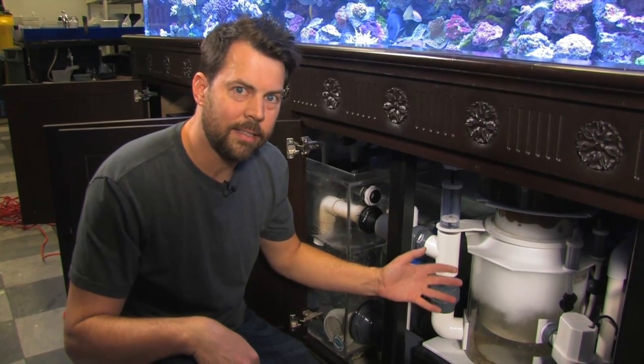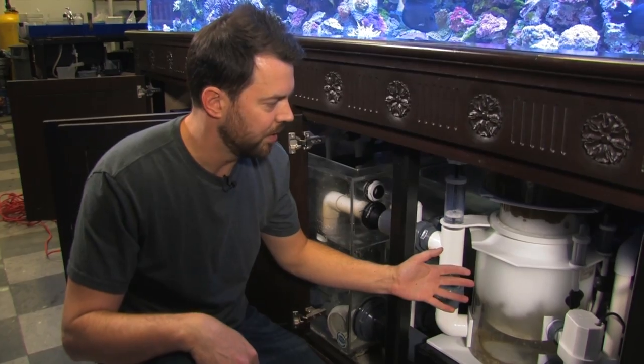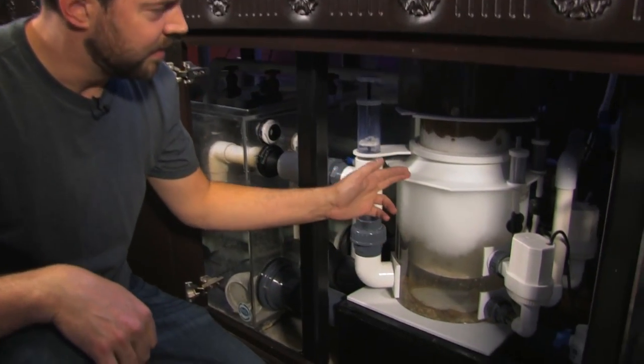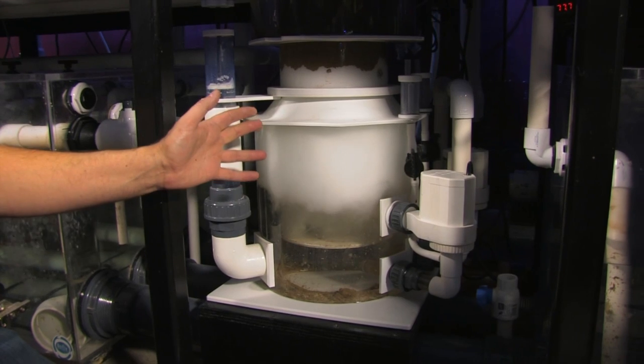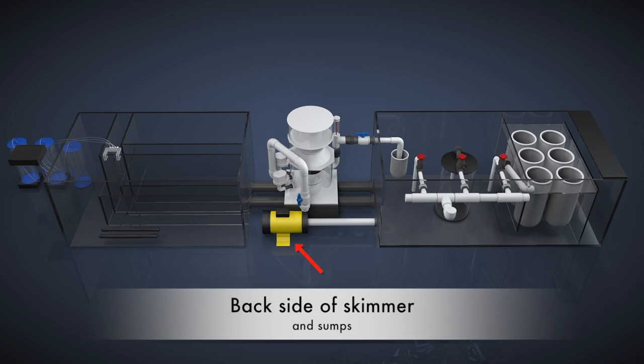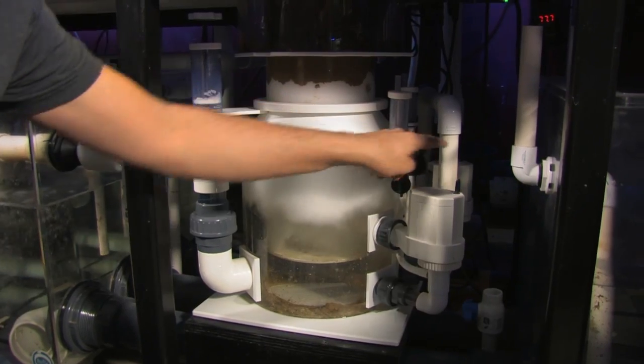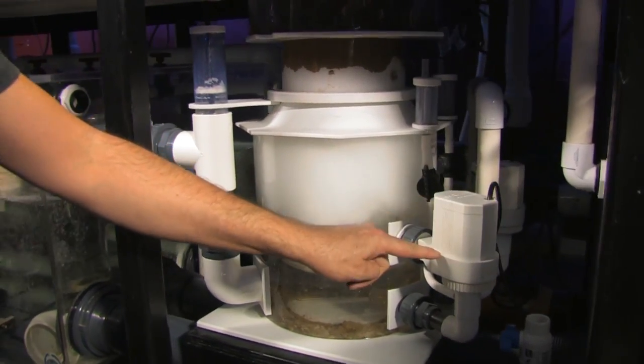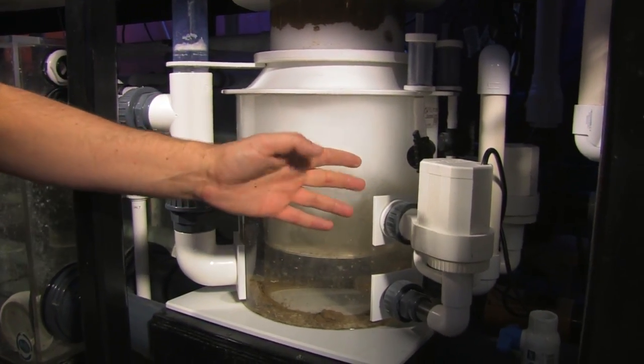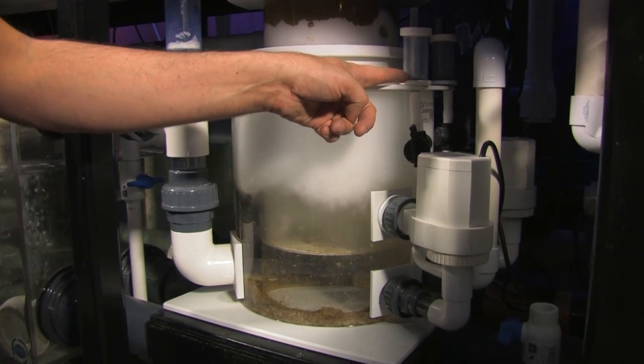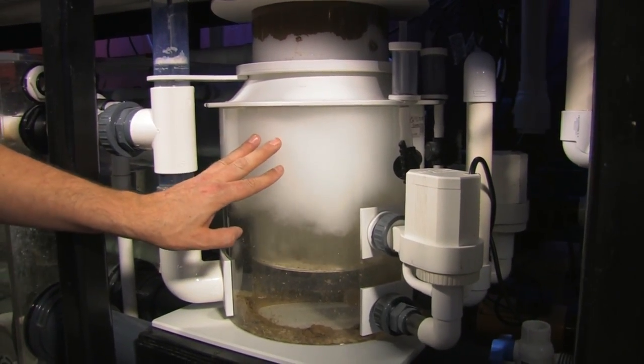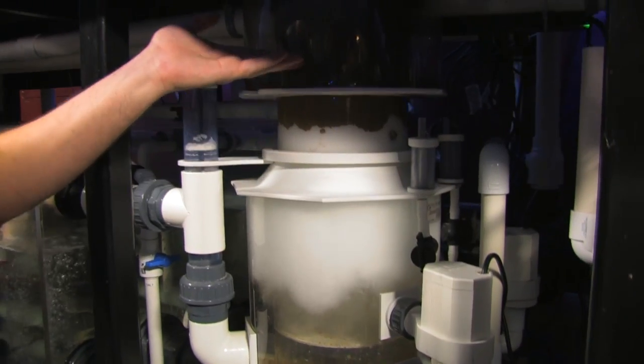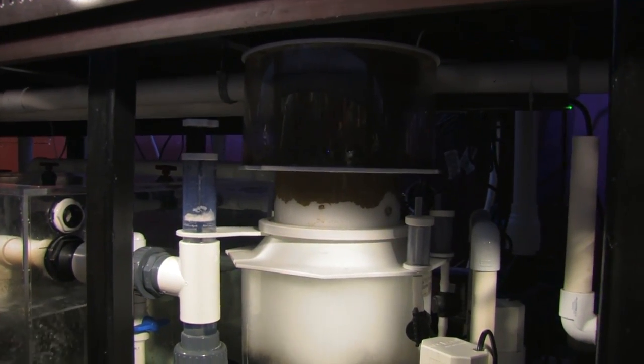Here we have our Deltec TC3070S protein skimmer. And this is actually rated to handle an aquarium of up to about 1500 gallons. It has a yellow pan world pump back in the back, which feeds water into the skimmer through this one inch pipe here. And then two pumps here that recirculate water within the skimmer and draw in a mixture of air through these mufflers to create that thick foam and collect all that yucky muck out of the water in the tank.